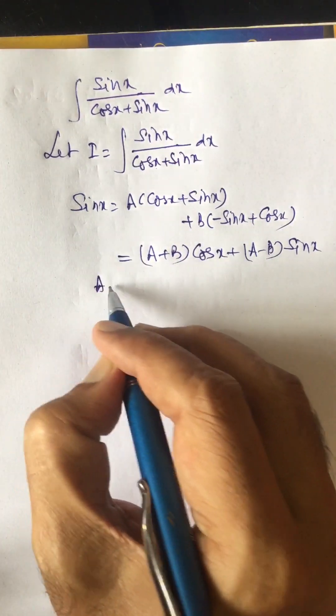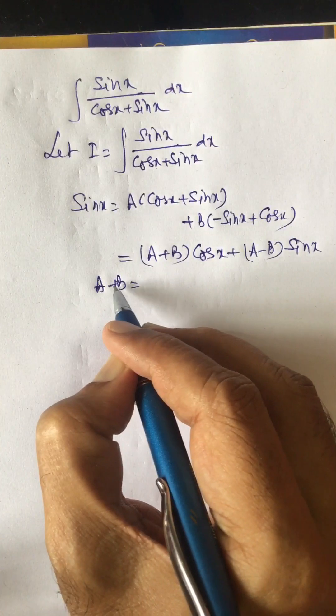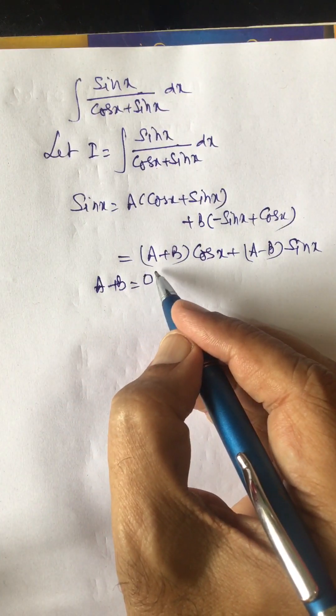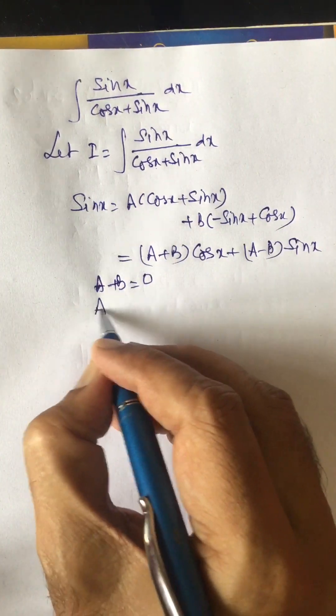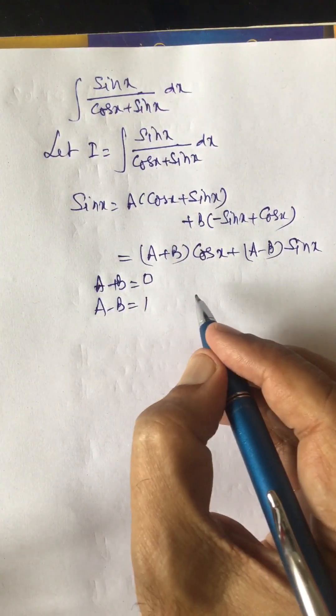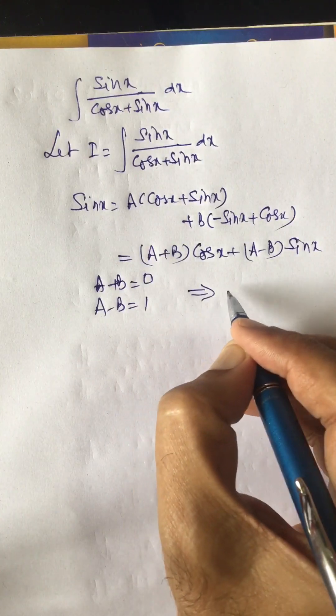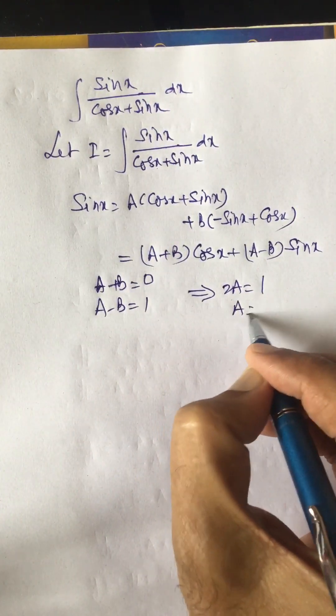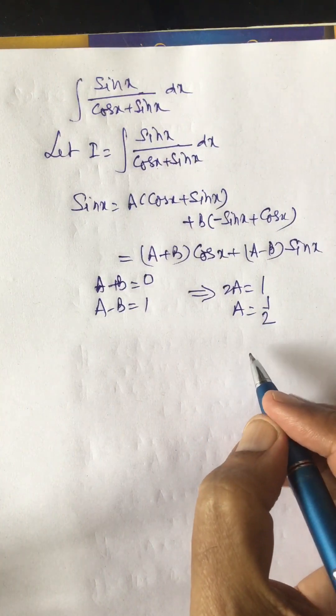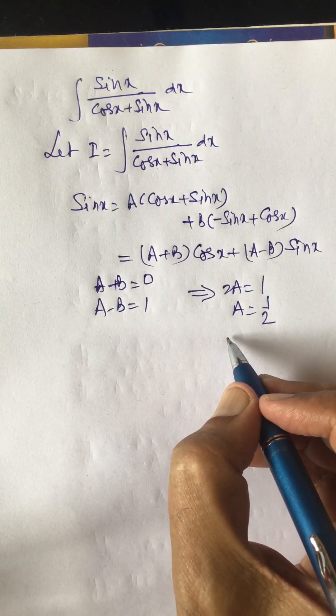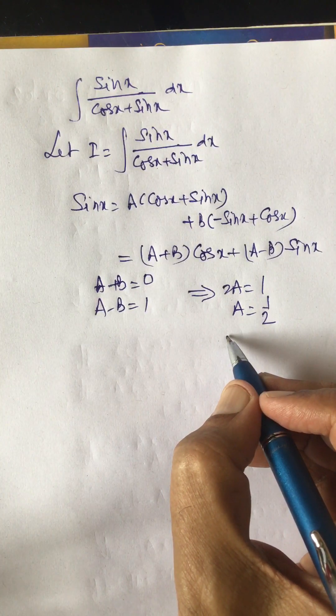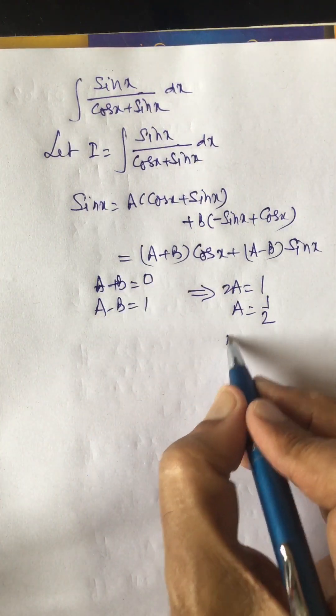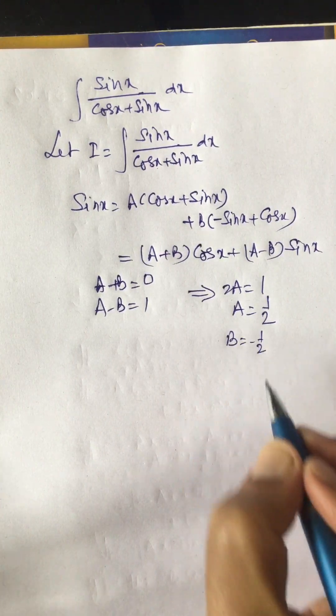Equating these terms we get a plus b equal to 0 and a minus b equal to 1. This gives 2a equal to 1 or a equal to 1 by 2. Since a plus b is 0, b will be equal to minus 1 by 2.